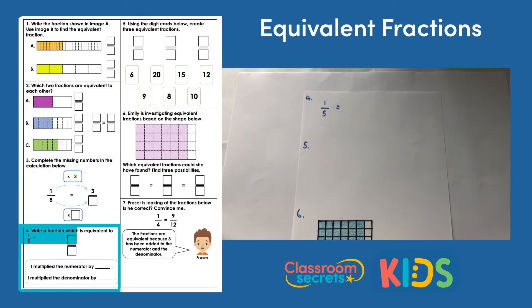Question number 4. Write a fraction which is equivalent to 1 fifth. I've written 1 fifth here and we're going to think about applying that rule again, multiplying the numerator and the denominator by the same number. There are lots of different answers to this and I'm just going to give you one example. But as long as you've multiplied the numerator and the denominator by the same number, your answer will also be an equivalent fraction.